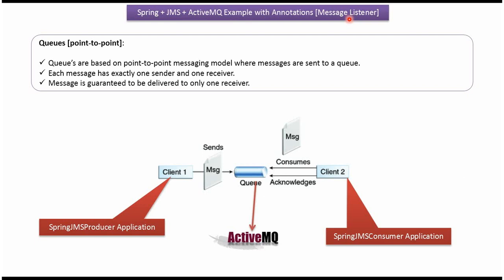In this video tutorial I will explain how to receive the message asynchronously using a message listener. Here you can see client1, which is the message producer, which will create the message and send it to the queue. Here you can see client2, which is the message consumer, which consumes the message from the queue and acknowledges back to the queue. In this example we will use a queue of ActiveMQ and we have developed two applications.